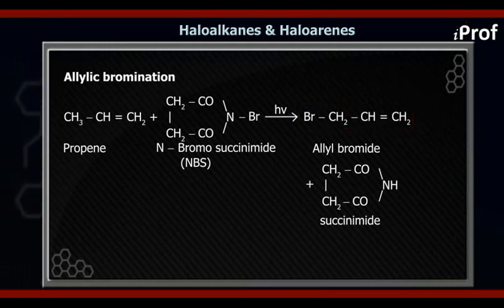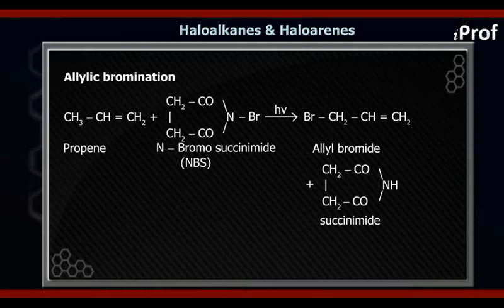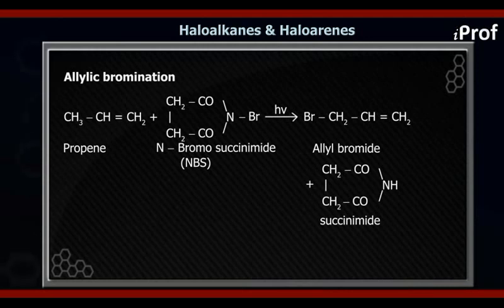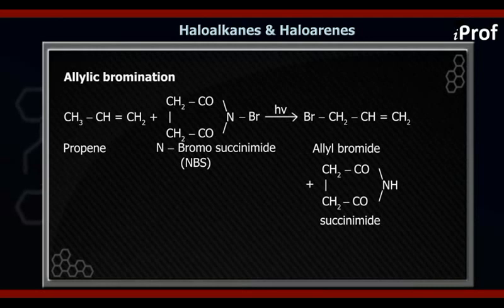We do have NCS also, which means N-chlorosuccinimide, but the yield of the chloro at the allylic position is not that good. That is why this method is only for substitution by bromine at the allylic position. Once the allylic hydrogen of the alkene is replaced by the Br of the NBS, the H goes to the NBS and the byproduct formed is succinimide. With this, we complete the method of preparation of RX using alkenes.